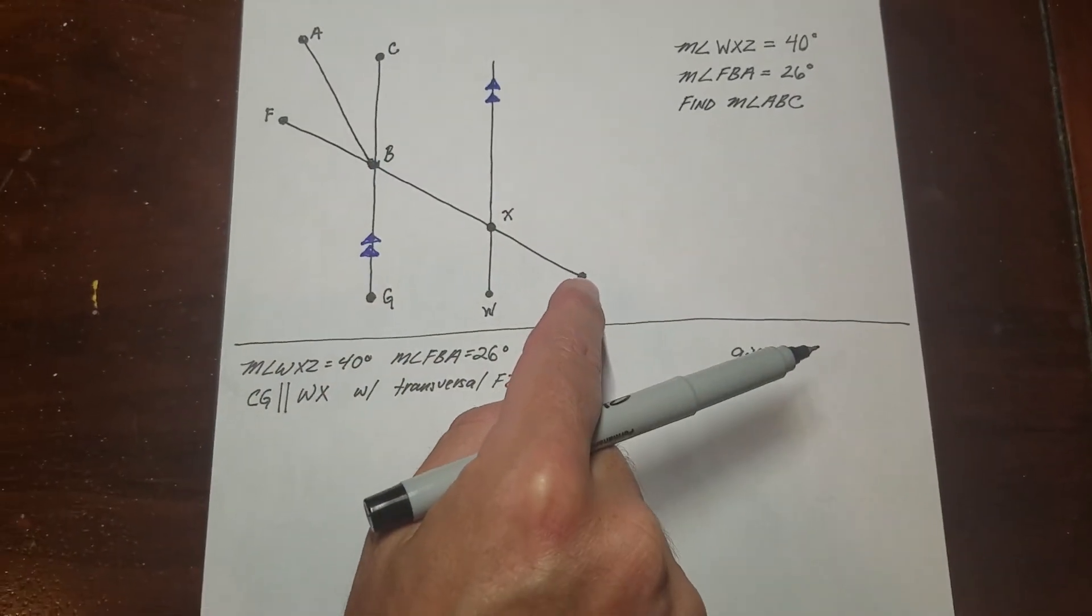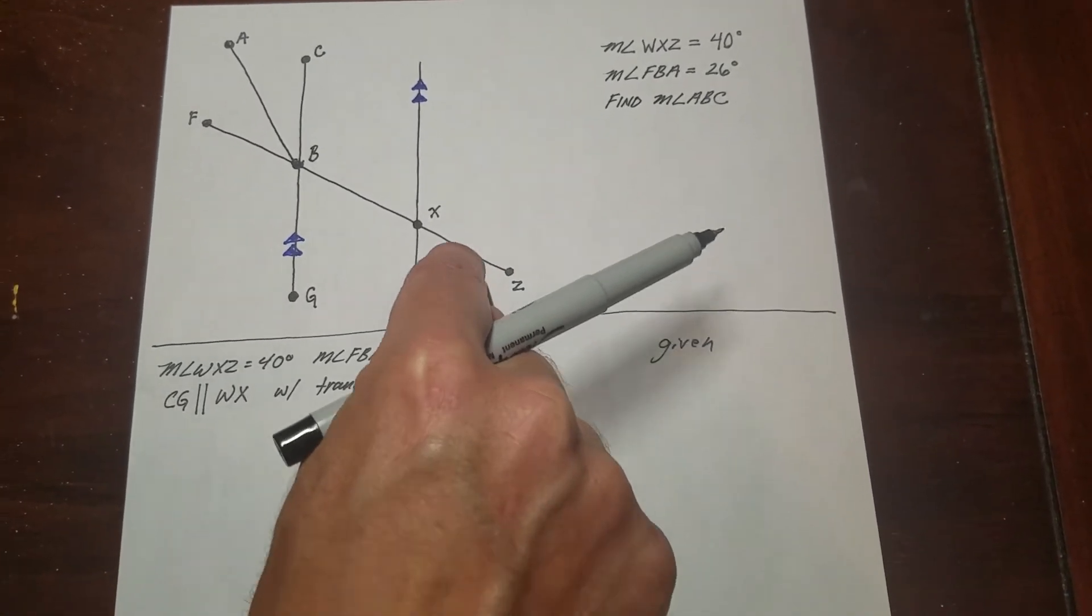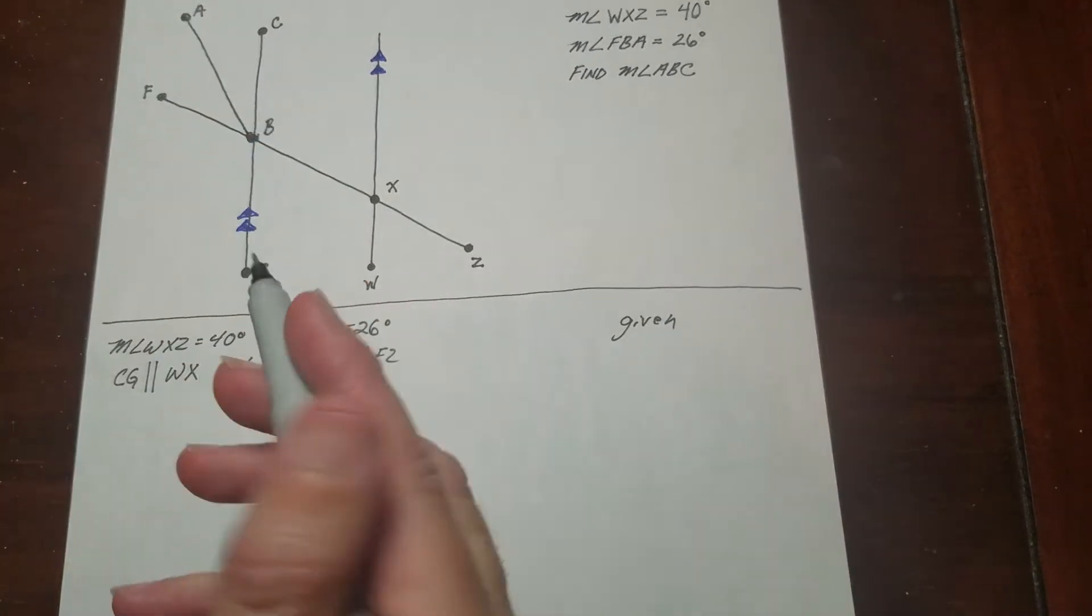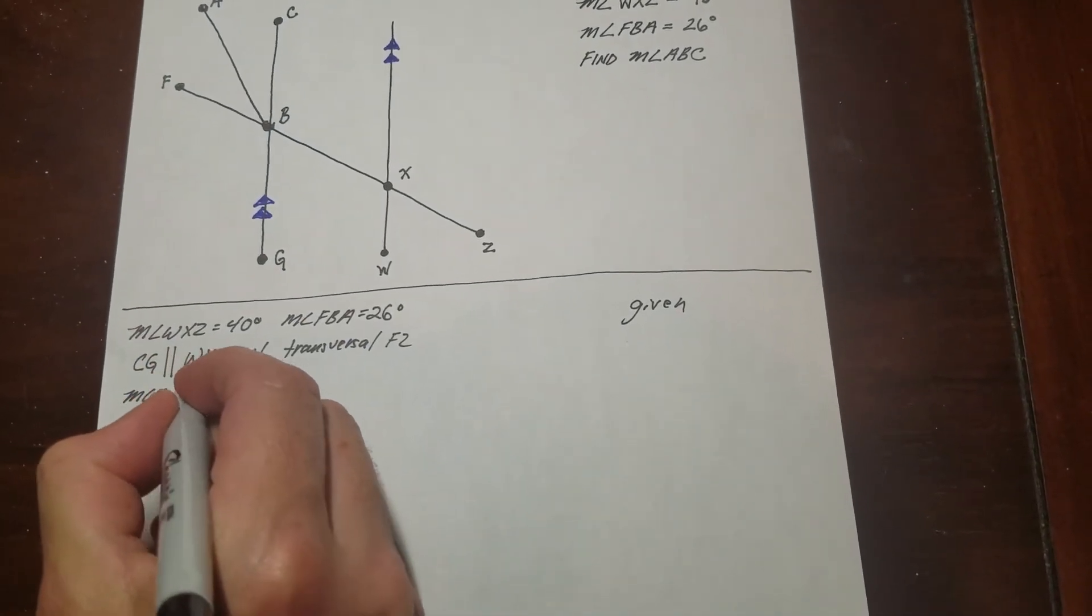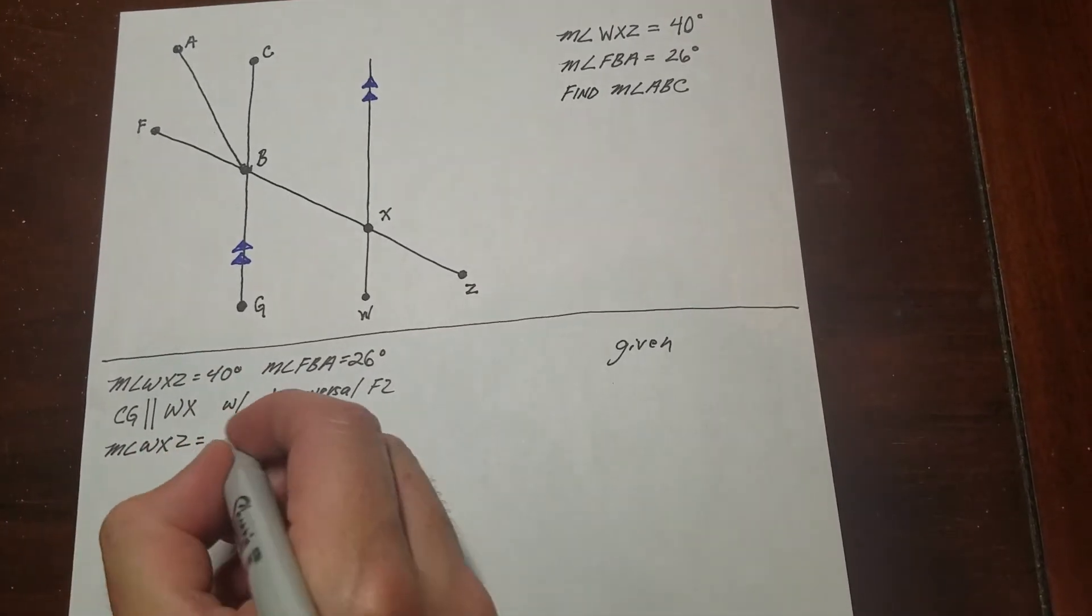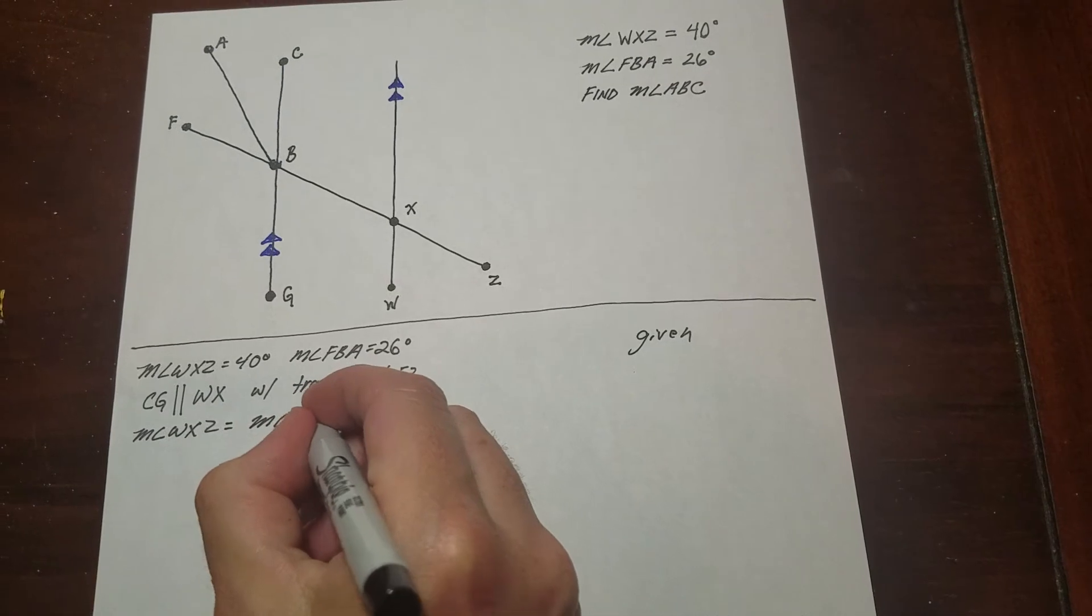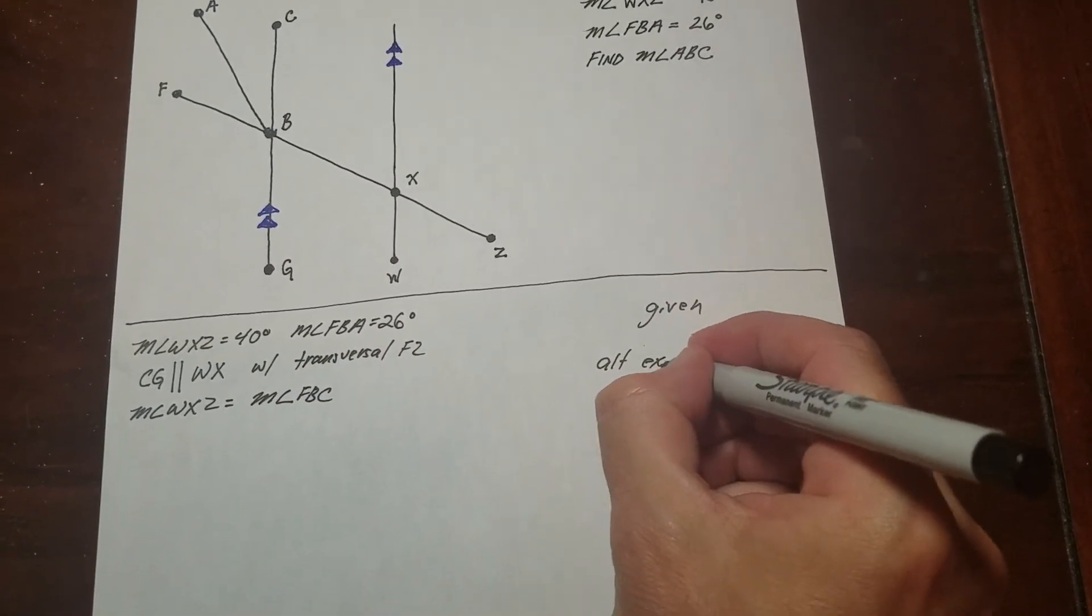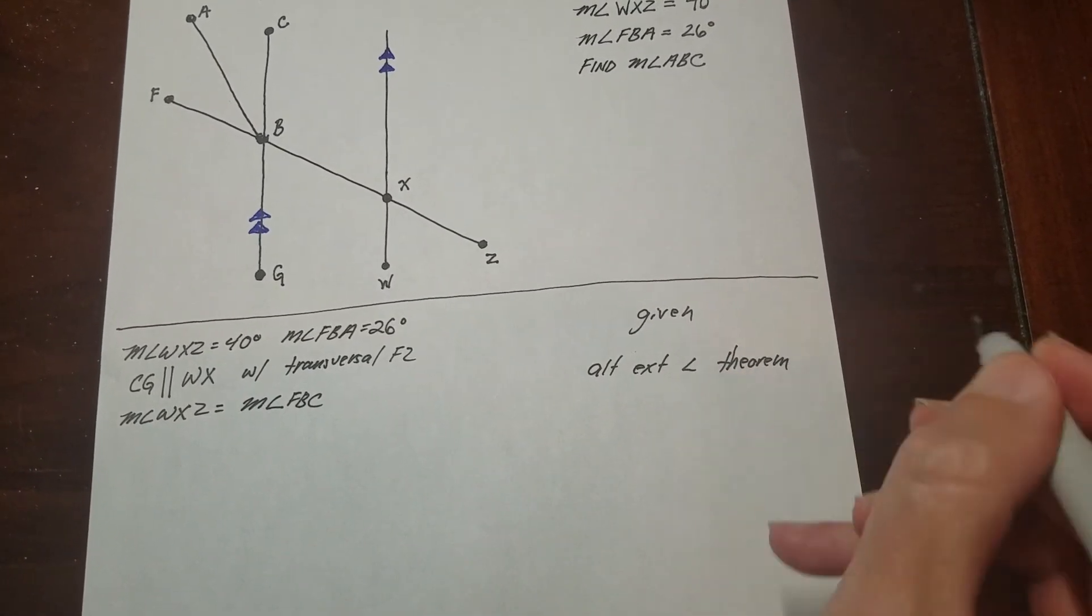And the quickest way to do that is the alternate exterior, which means this one is alternate exterior with this FBC one up here. So I'm going to go ahead and write that down. So this one here is equal to this angle here. And that is the alternate exterior angle theorem. That's how I know that that's true.